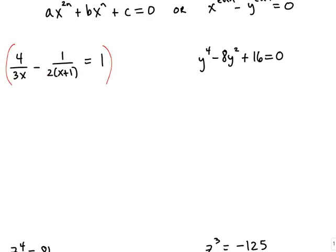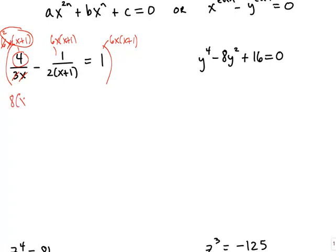We're going to take the entire equation times 6x(x + 1) and multiply that by the first fraction, the middle fraction, and the one on the right-hand side. If we multiply 6x(x + 1) by the first fraction, the 3 goes into the 6 twice and the x cancels out, so what we have left is 2(x + 1) and the 4. Two times 4 is 8, and I'm just going to leave that x + 1 in parentheses for now.